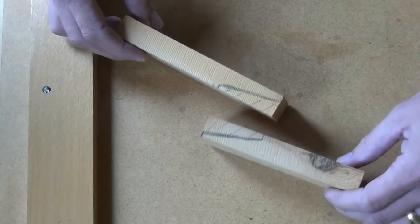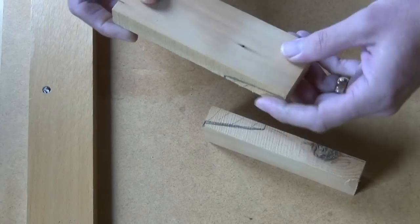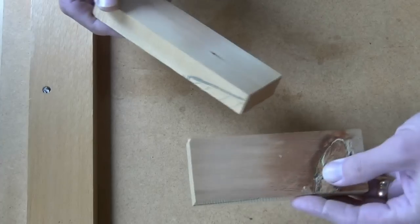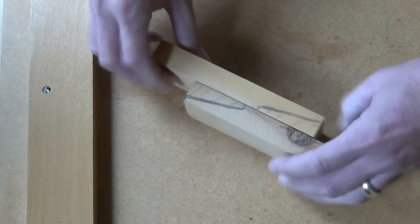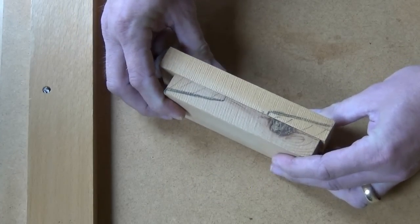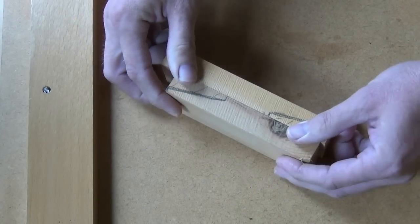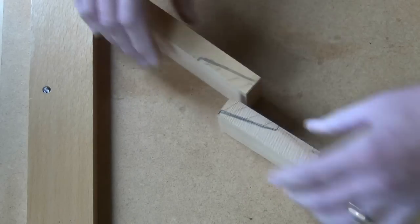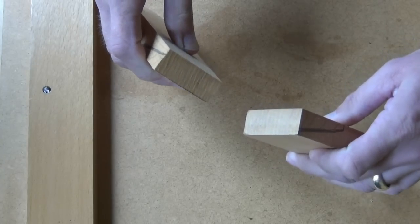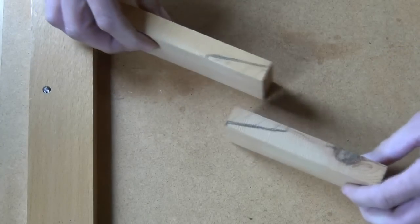As you can probably see, these components are still slightly rough so I need to plane those nice and square and true all round to the same cross-sectional dimensions and then we can start the joint.